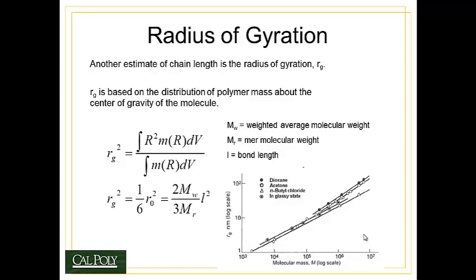Another dimension we can measure for a coiled polymer chain in the melt state is the radius of gyration, Rg. Rg is based on the distribution of polymer mass about the center of gravity of the molecule. It is defined as the square root of the integral of r²·ρ(r)·dV divided by the integral of ρ(r)·dV. Working out those integrals gives the result that Rg² = (1/6)·R₀². So if you know R₀, you can convert it to Rg.